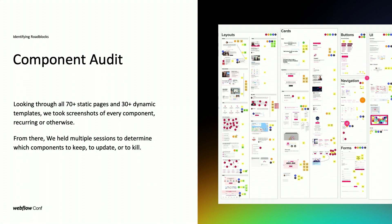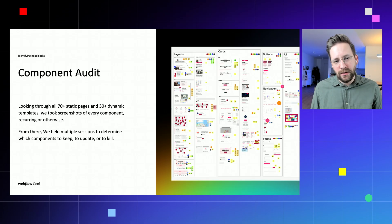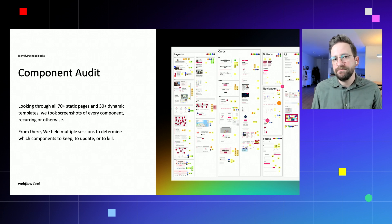So what we did was a component audit. Due to the organic growth and the absence of rules and guidelines, the styles and components on our website outgrew our ability to maintain overview and consistency. We looked through about 70 static and 30 dynamic template pages, then used our tool, Mural, to collect hundreds of screenshots of different components and styles found during the audit. In a collaborative series of workshops with our team, we determined which components to keep, update, or kill entirely. The ultimate goal was to harmonize the design of our website, but also to simplify the building processes and maintenance of our site.